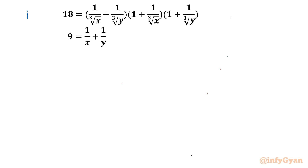Let us consider this as equation 1 and equation 2. We can observe that 1 over cube root x, 1 over x, 1 over cube root y, and 1 over y are all involved — everything is in the denominator. So we have to use a substitution to remove or reduce this complexity.